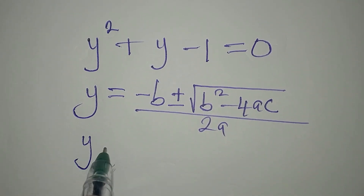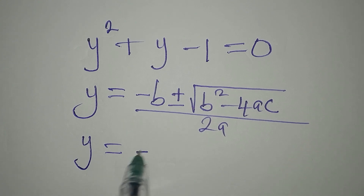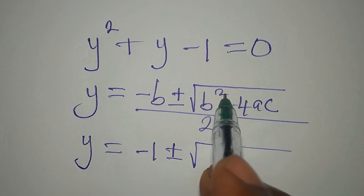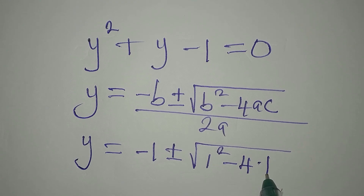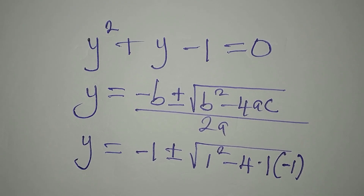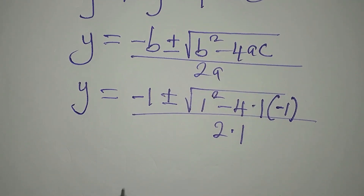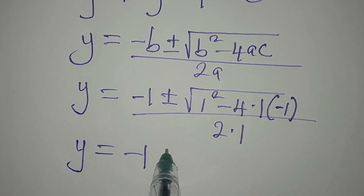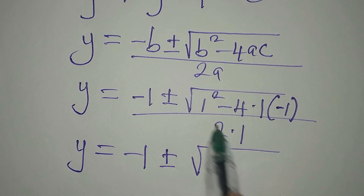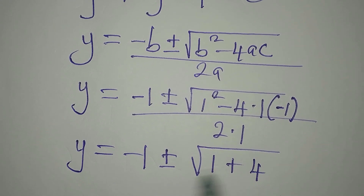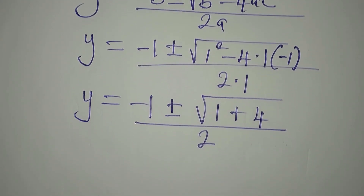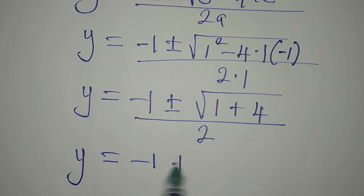So y would now be minus b, which is minus 1, plus or minus the square root of b squared — 1 squared — minus 4 times a times c, which is minus 1, all divided by 2 times 1. So our y will be minus 1 plus or minus the square root of 1 plus 4, divided by 2. So y is minus 1 plus or minus square root of 5 over 2.